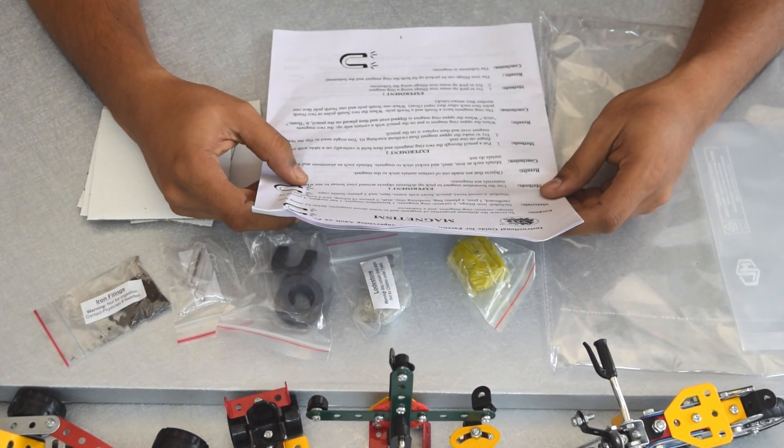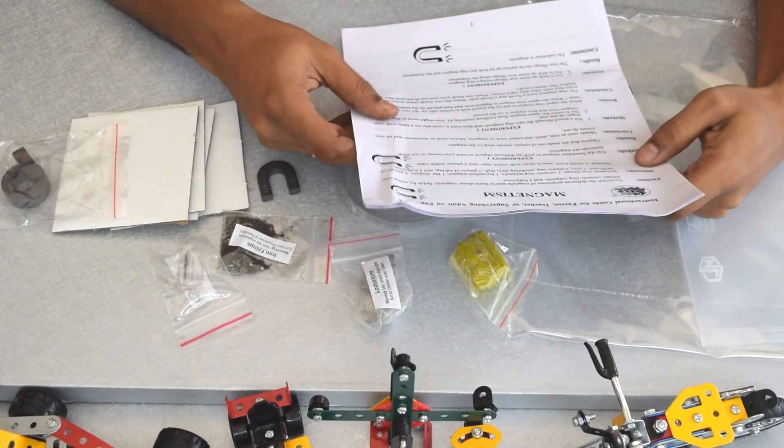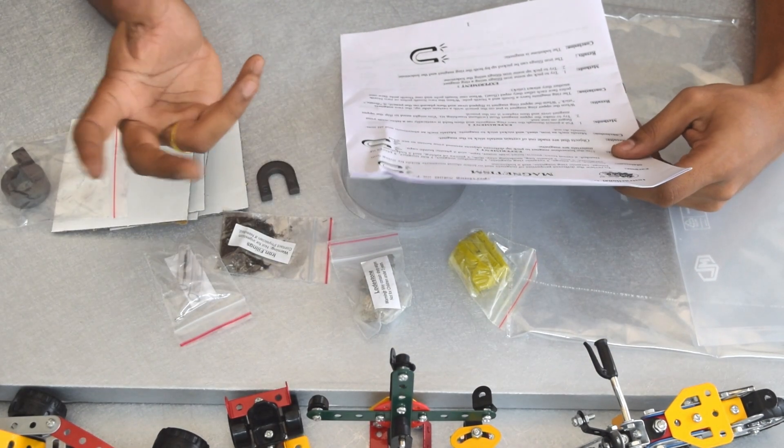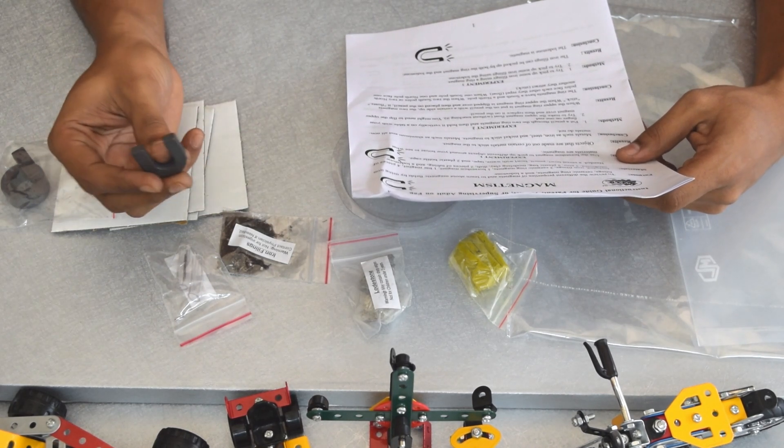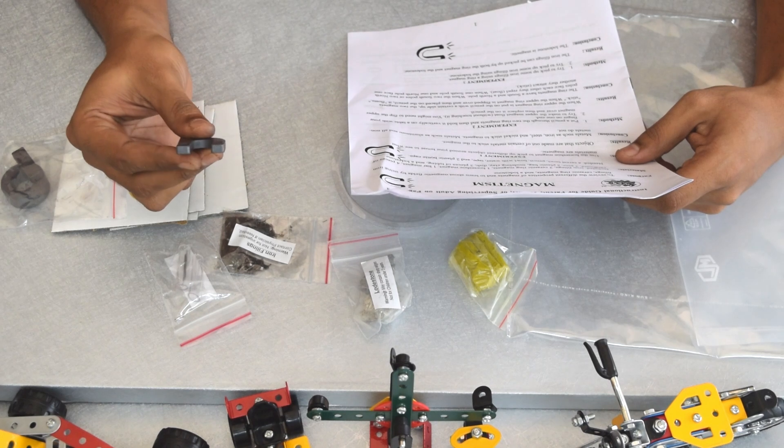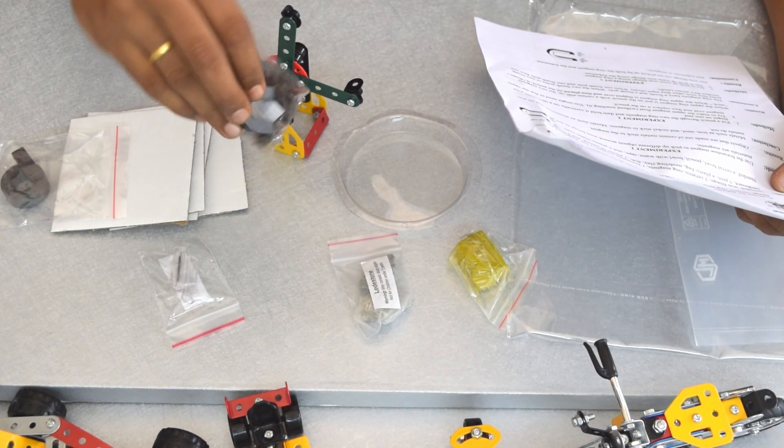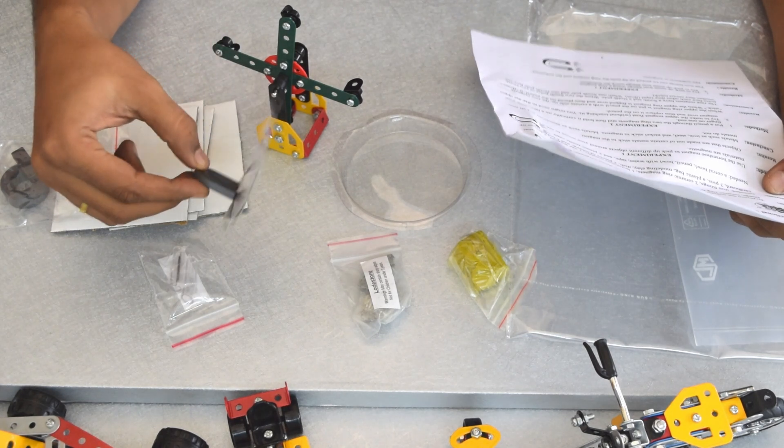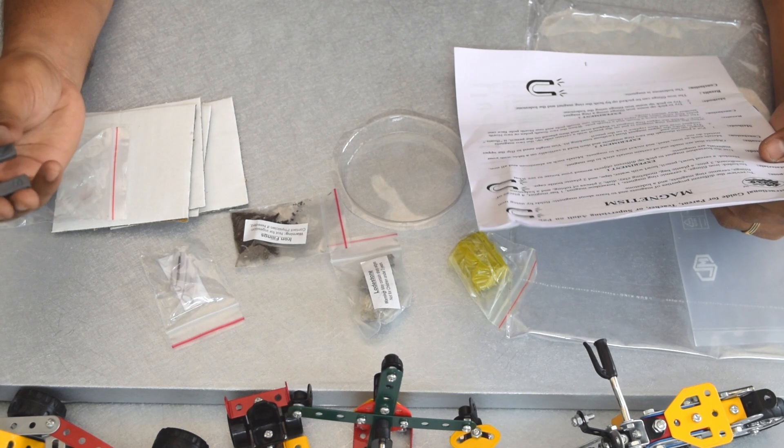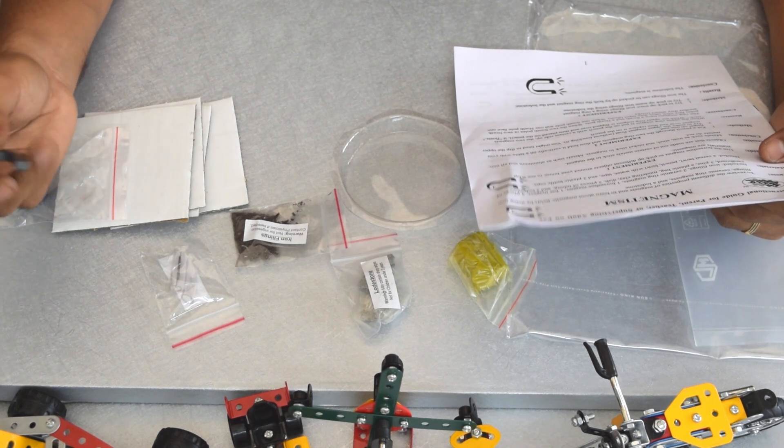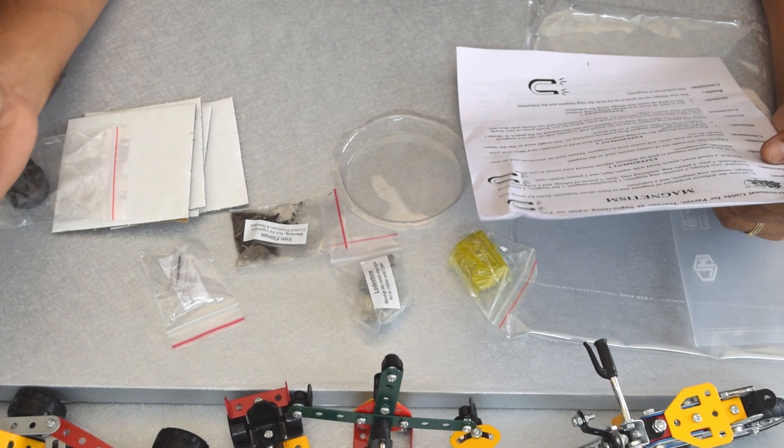Starting with experiment one using a horseshoe magnet. Experiment one says to use the horseshoe magnet to pick up different objects around your house to see what materials are magnetic. This is not a really powerful magnet but it does hold these iron filings. The conclusion says metals such as iron, steel, and nickel stick to magnets. Metals such as aluminum and all non-metals do not stick to the magnet.